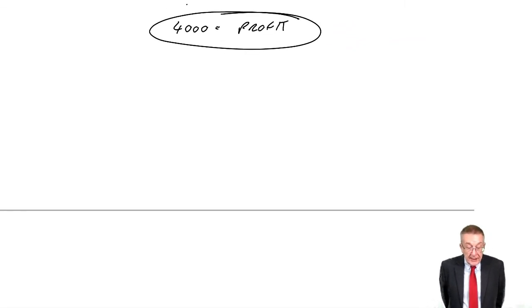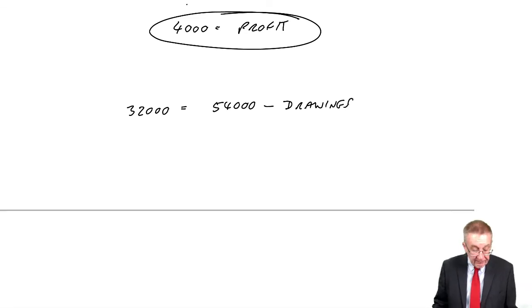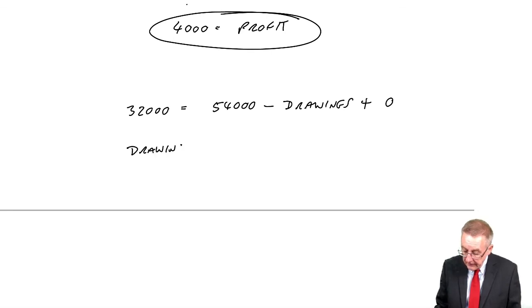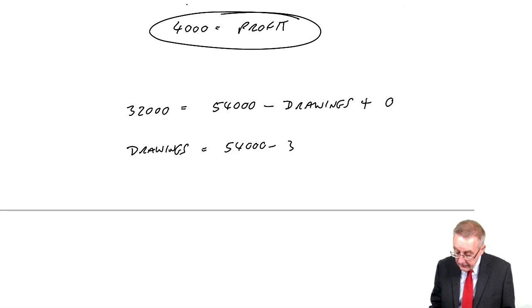On 1st of January, the net assets were 118,000. On 31st of December, they were 150. The increase in net assets, 150 minus 118,000, is 32,000. It's equal to the profit, we know the profit here is 54,000, minus the drawings - that's what we're trying to find - plus the capital introduced. Well, there's been no additional capital. So it's just simple algebra. If you add drawings to both sides, drawings plus 32 is 54. If you subtract 32 from both sides, the drawings are 22,000.